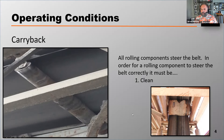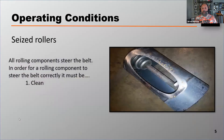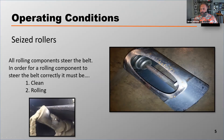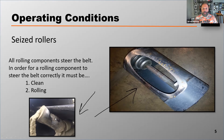Another operating condition is seized rollers. If you've got seized rollers — and these photos are a clear indication of a seized roller — if those rolling components are not rolling, that belt will not operate properly.